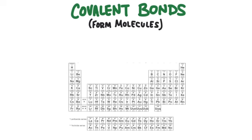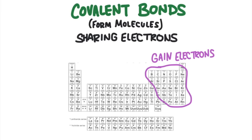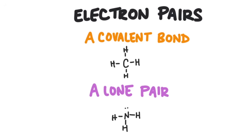Elements on the right side of the periodic table tend to gain electrons. What if two elements that wanted to gain electrons came together to form a chemical bond? They can't both steal electrons from one another — instead, they will end up sharing their valence electrons. A covalent bond is formed when atoms share valence electrons, and when a covalent bond forms, a molecule is created. With covalent compounds, atoms will not form ions and so there will not be any charges. Instead, we're going to pair up unpaired valence electrons. Electrons want to be paired with another electron — they like to be in groups of two. They can be paired in a covalent bond or as a lone pair around the atom.